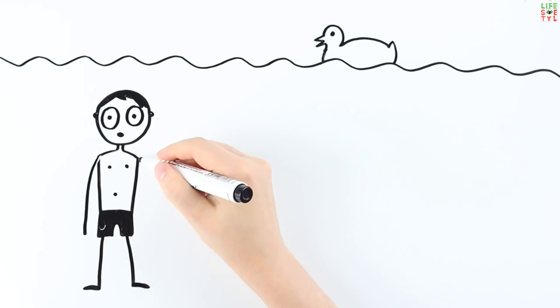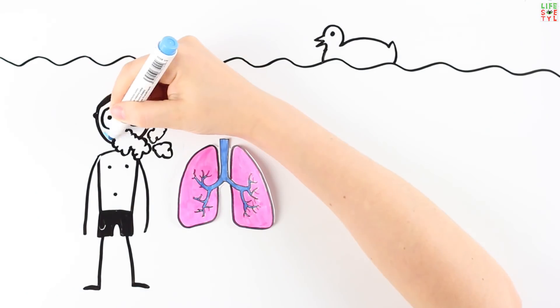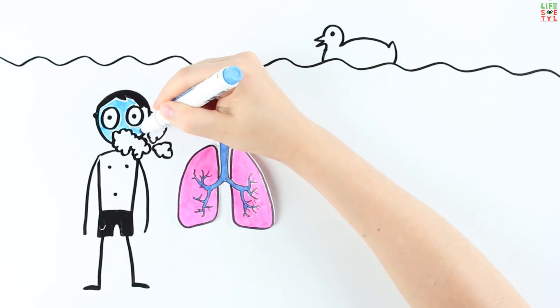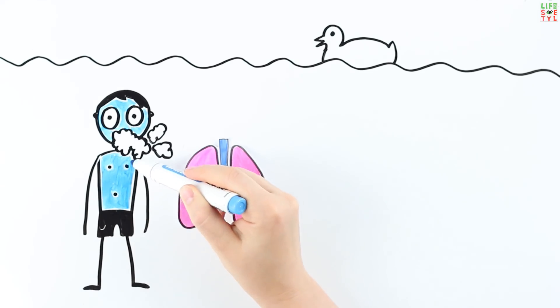In this case, the alveoli of the lungs are affected and foam is released abundantly from the mouth and nose of the drowning person. Their skin and mucous membranes turn blue due to the lack of oxygen.